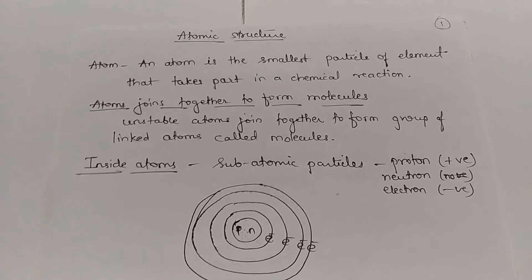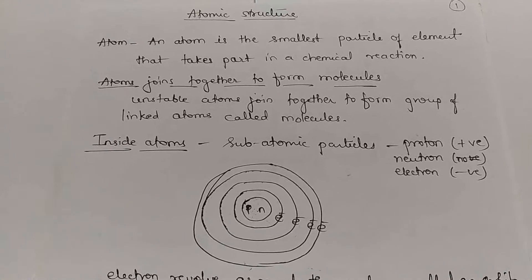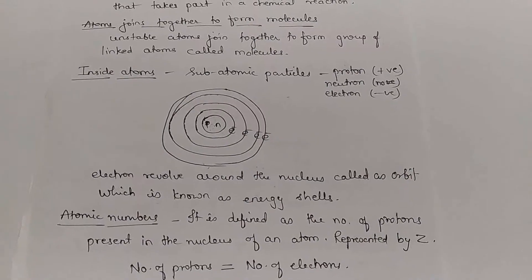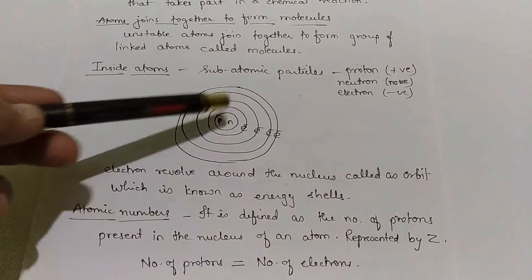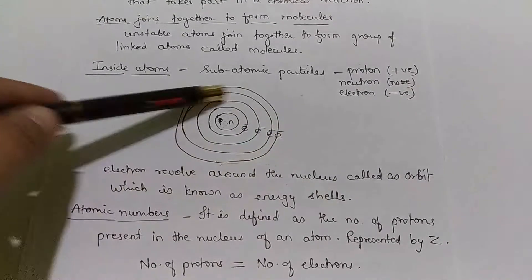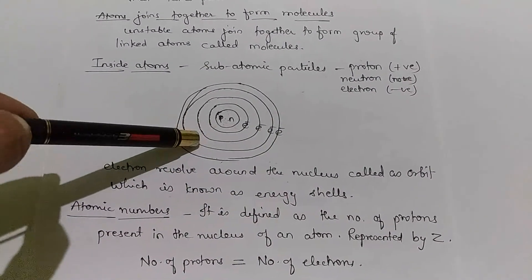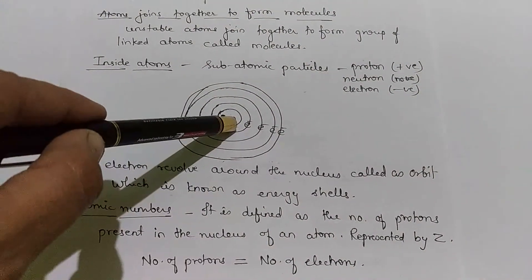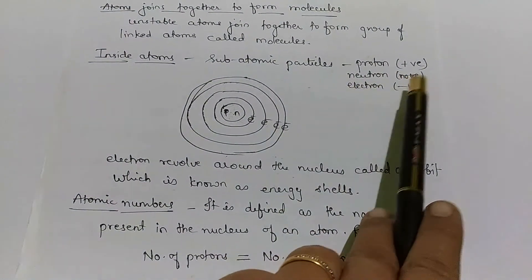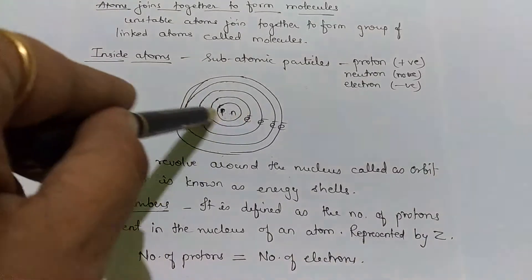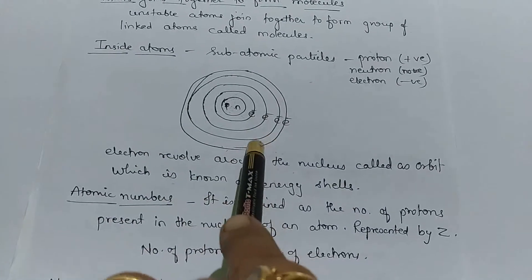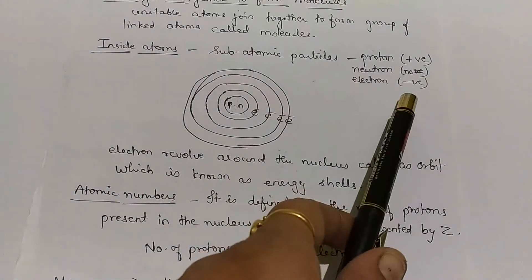Now, what is present inside an atom? The central part of an atom is called the nucleus. The nucleus is surrounded by a circular path called an orbit or energy shell. Inside the nucleus there are two subatomic particles: the first is a proton, which is positively charged, and the other is a neutron, which doesn't carry any charge.